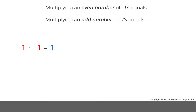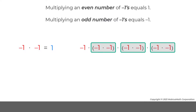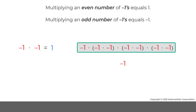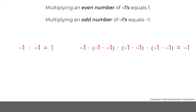A similar strategy can be applied to multiply an odd number of negative 1's. Once again, multiplying each pair of negative 1's equals 1. But, because there is one negative 1 left over, the product of an odd number of negative 1's equals negative 1.